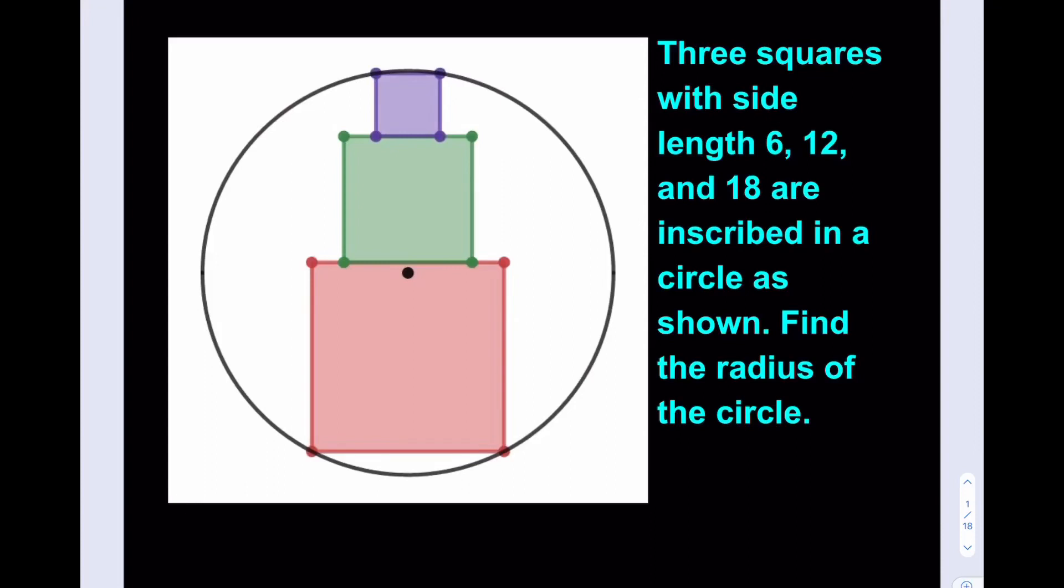Hello everyone, in this video we're going to be solving a geometry puzzle. At one point we inscribed three identical squares in a circle. This time we're going to be inscribing three squares in a circle, but they're going to be different sizes and they're going to be stacked like this. Three squares with side lengths 6, 12, and 18 are inscribed in a circle as shown. Find the radius of the circle.